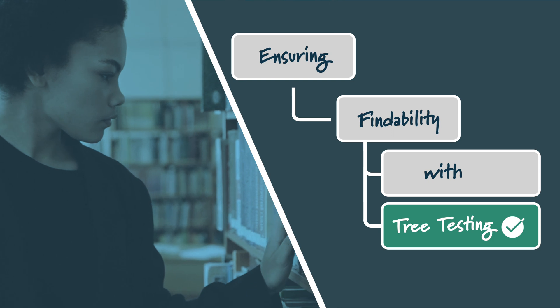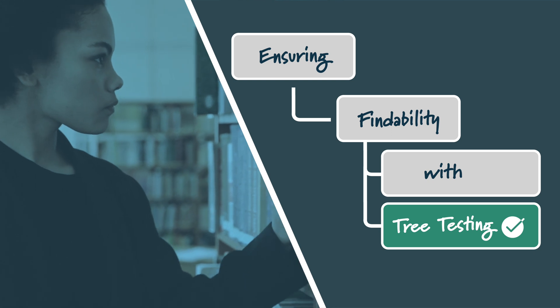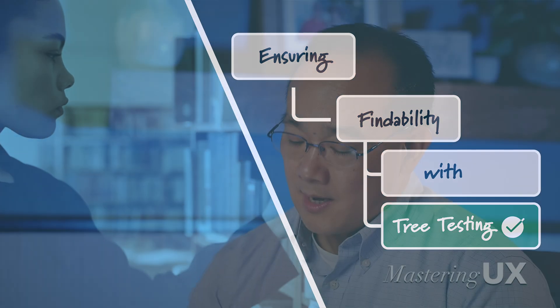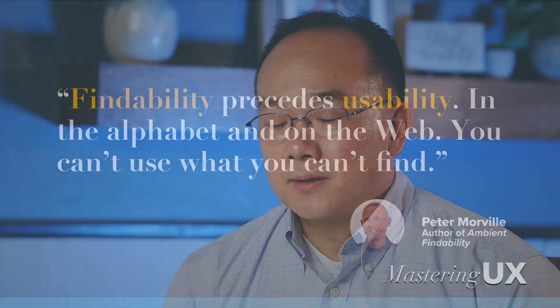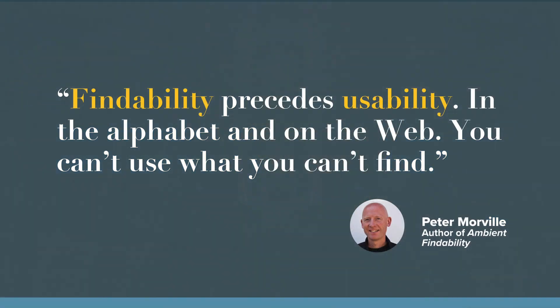With card sorting, there's a lot more interest around finding the overall organization. And instead of looking at the user's behavior and what they do with the task, it's really taking a bit more of a look at how do they think of things and what is their mental model. I want to start you off with this quote, and it comes from Peter Morville. Peter Morville says, 'Findability precedes usability, in the alphabet and on the web.'